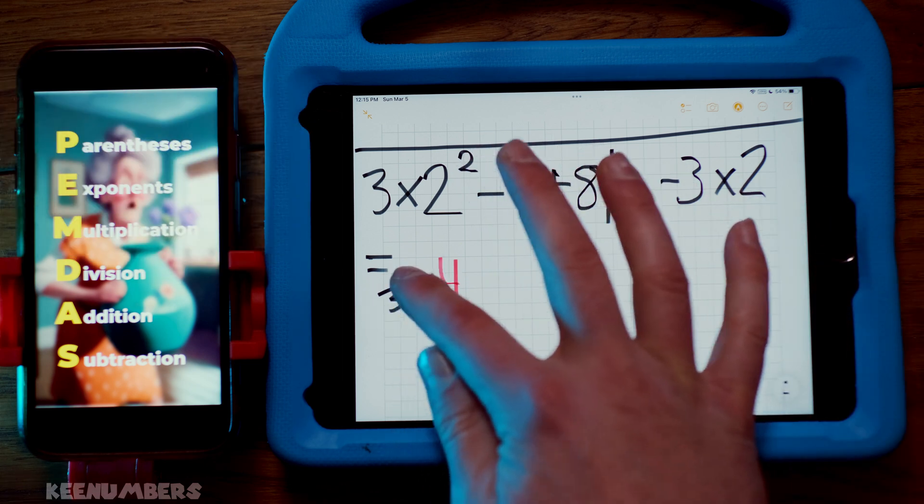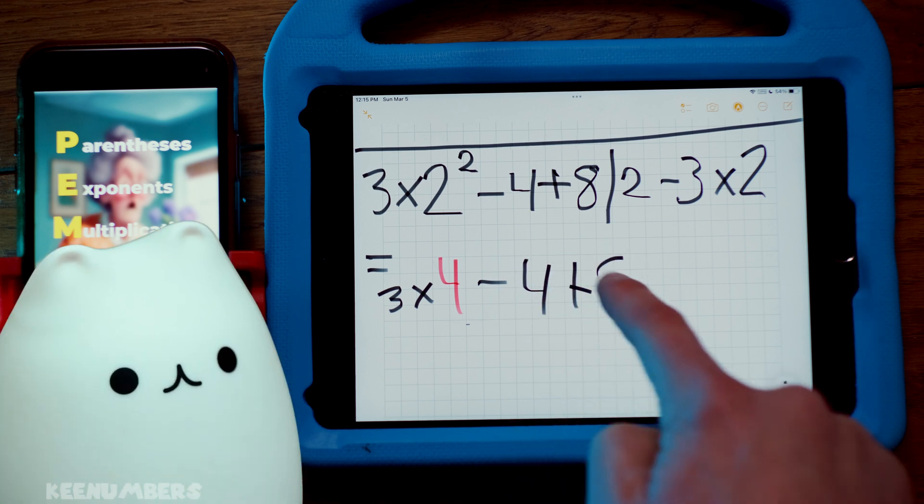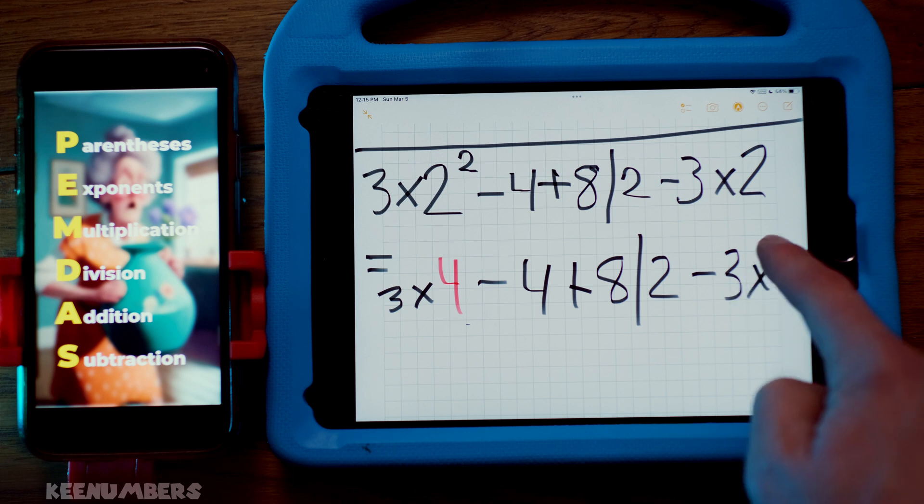All right, press on lads and lasses. You have three by four, and then you're going to subtract four, and you're going to add eight, divide it by two, and then you're going to subtract three by two.